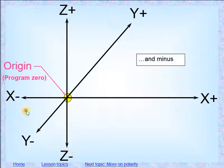And you'll see the other opposite ends of the polarity system over here. So X positive, X negative, Y positive, Y negative, and Z positive, Z negative.